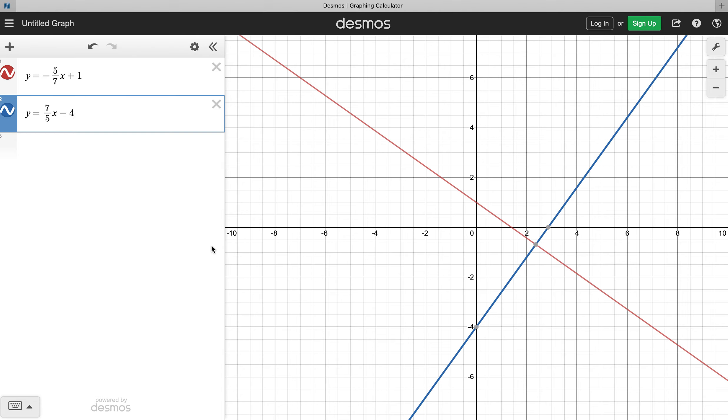So hopefully that's a good introduction to what it would mean to be parallel lines and then perpendicular lines. Perpendicular lines have opposite reciprocal slopes. Parallel lines have the exact same slope.